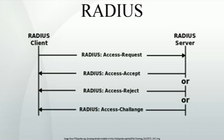The RADIUS server then returns one of three responses to the RAS: one, access reject; two, access challenge; or three, access accept. Access reject means the user is unconditionally denied access to all requested network resources. Reasons may include failure to provide proof of identification or an unknown or inactive user account.